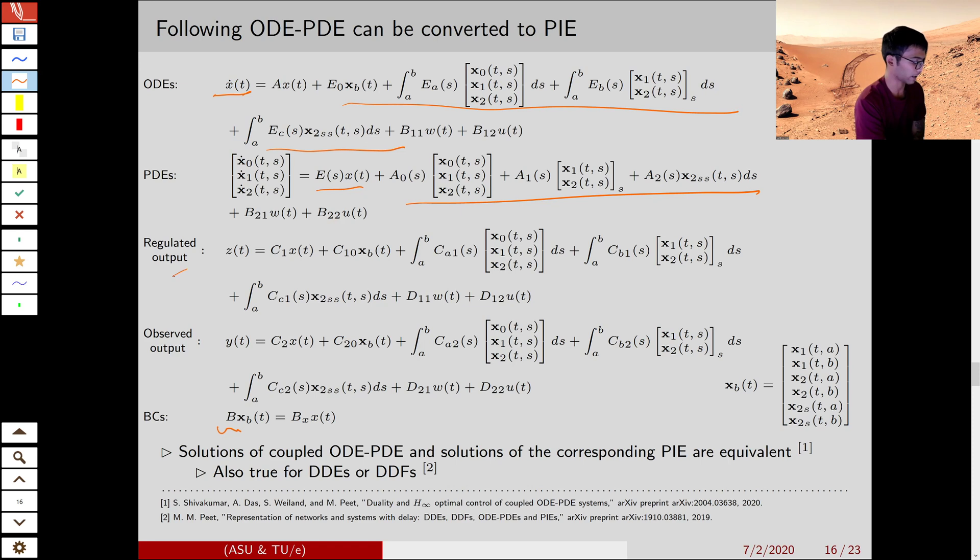We have PDE dynamics that is impacted by the ODE state and the derivatives of PDE state. We have regulated output, we have observed output, which are bounded operators on the states and inputs and disturbances. So the most important part is, of course, the boundary condition,